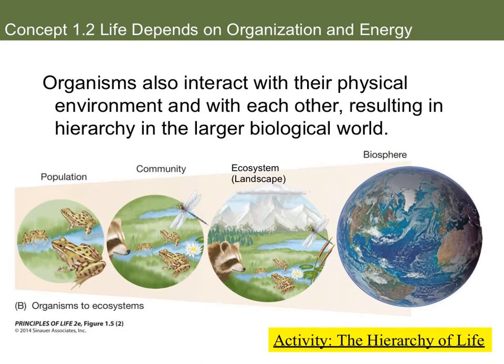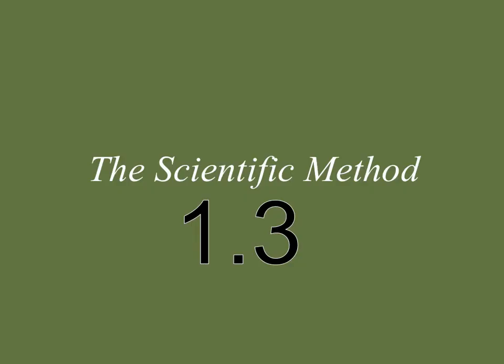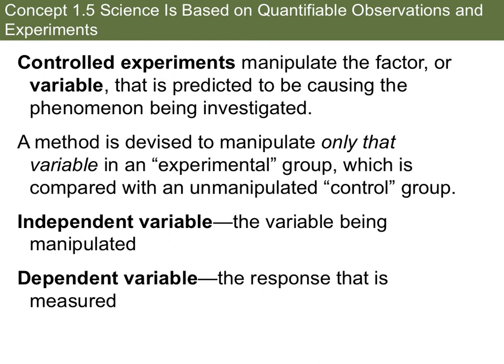There is an activity you can click on to do about this hierarchy. Here is a list to check to make sure you got all 13 levels, from smallest to largest — you would need to know those. Our next section is the scientific method or the experimental process. All experiments that are run need to be controlled experiments. A controlled experiment is going to manipulate only one thing; all other conditions need to stay the same or constant.